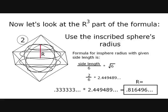Now let's look at the r cubed part of the formula. It is important to consider that the r is referring to the inscribed sphere's radius. That is, if you were to put a sphere inside the octahedron so that it was as large as it could be without protruding through one of the sides of the octahedron. Use the measurement of that sphere's radius. There are established formulas for arriving at an inscribed sphere's radius of any of the regular solids given a side length.